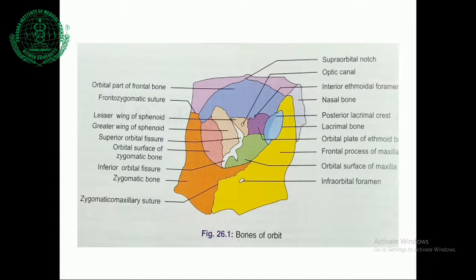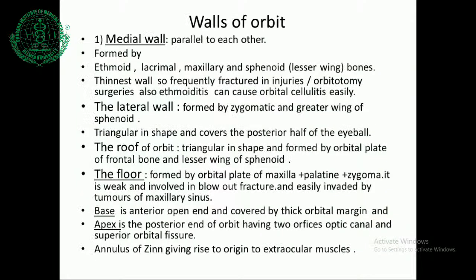This figure shows the different bones of the orbit. Now coming to the walls of the orbit — the medial walls are parallel to each other, formed by ethmoid, lacrimal, maxillary, and sphenoid lesser wing. It is the thinnest wall, so frequently fractured in injuries and orbital surgeries. Paranasal sinus infection and ethmoiditis can cause orbital cellulitis easily.